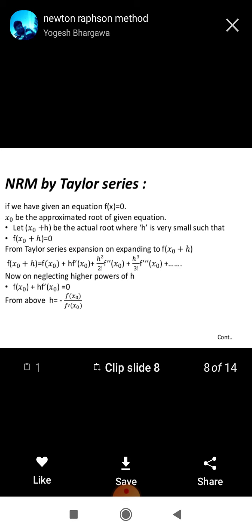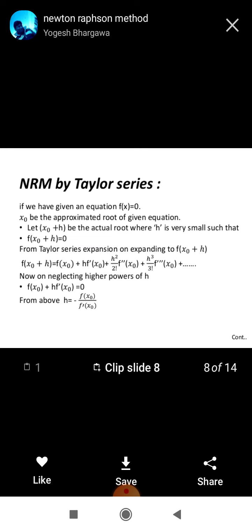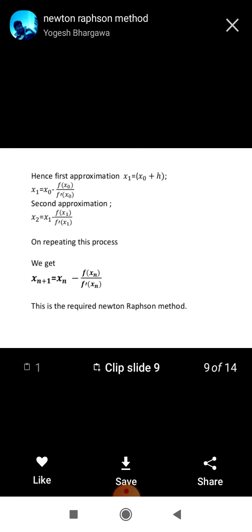So, h equals minus fx0 upon f prime x0. Hence, approximation x1 equals x0 plus h.